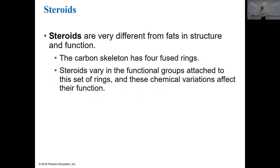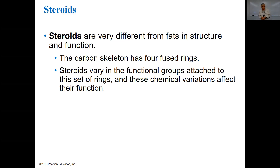Steroids are very different from fats in structure and function. The carbon skeleton has four fused rings. Steroids vary in the functional groups attached to these rings, and chemical variations affect their function. They have really important functions in animals. They're all based on cholesterol — cholesterol is a steroid, the most basic one. It has a bad reputation for clogging arteries, but steroids also form steroid hormones in animals, including sex steroids, all made from cholesterol.